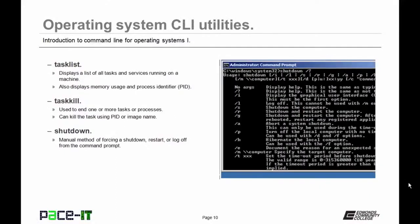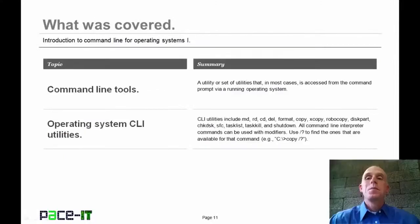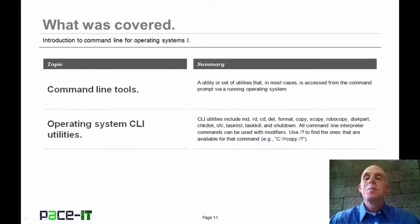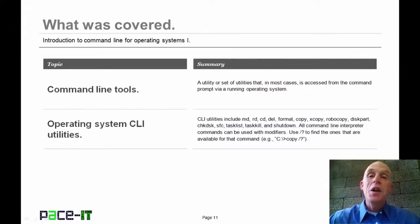Then we have shutdown — a manual method of forcing a shutdown, restart, or log off from the command prompt. That concludes this session on the command line for the operating system, Part 1. We talked about what command line tools are and then discussed some operating system command line utilities.